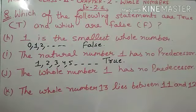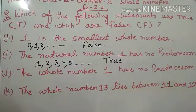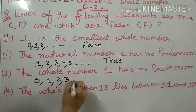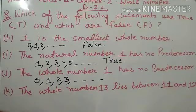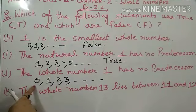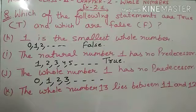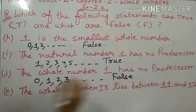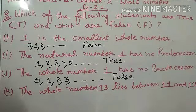Now j part: 'The whole number one has no predecessor.' Whole number one ka koi predecessor nahi hoota. Ab jo whole numbers hootet hai woh start hootet hai zero se — 0, 1, 2, 3. Ab yahan pe bula hai whole number one ka predecessor nahi hai. Toh yahan dekhiye one se pahle kya hai? Zero hai. Toh iska matlab yeh statement false huwa. Whole number one has no predecessor — this is a false statement. Kyunki iska predecessor hoota hai zero.